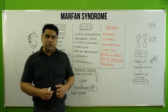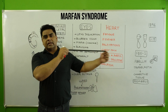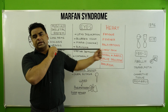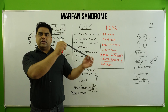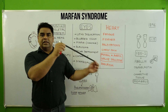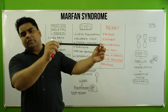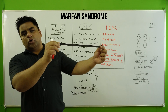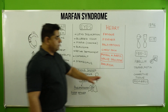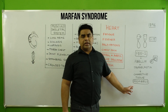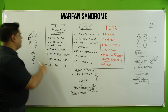Fibrillin, when released from the cell, joins with a scaffold with tropoelastin. Both of these together make myofibrils. As you can see with an elastic band, it shows elasticity due to its elastic fibers. If these very small fibers become hard and fibrotic, they will not be able to show elasticity.